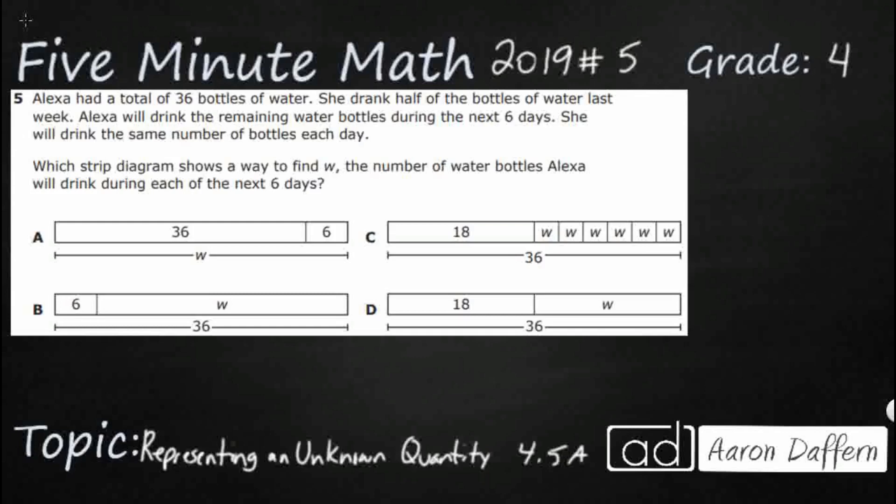Hello and welcome to 5-Minute Math. Today we are looking at the fourth grade concept of representing an unknown quantity. This is standard 4.5a in the great state of Texas and we are using item number five off the 2019 released STAAR test.